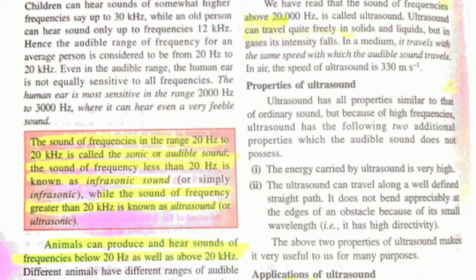There is a categorization of sound waves. Sound with frequency in the range of 20 hertz to 20 kilohertz is called audible sound or sonic sound. Less than 20 hertz is infrasonic sound. Ultrasound is greater than 20 kilohertz. You should know the range of frequencies.